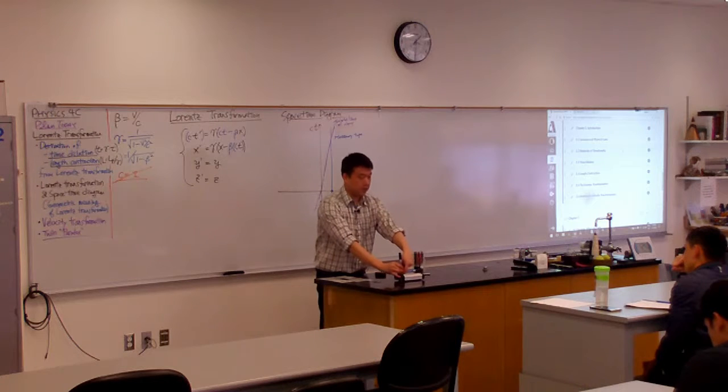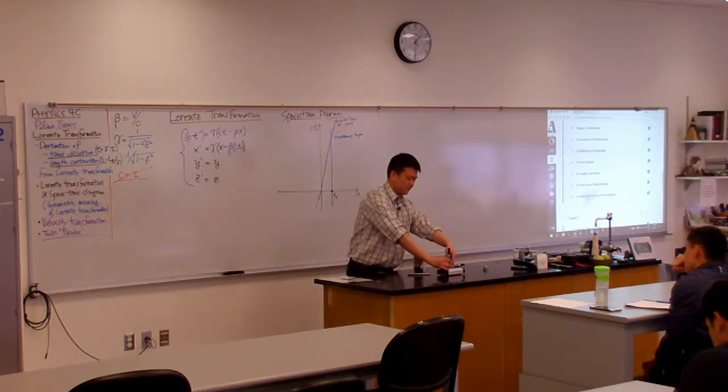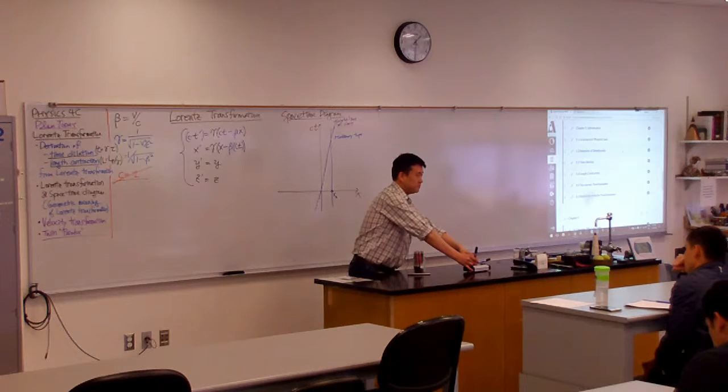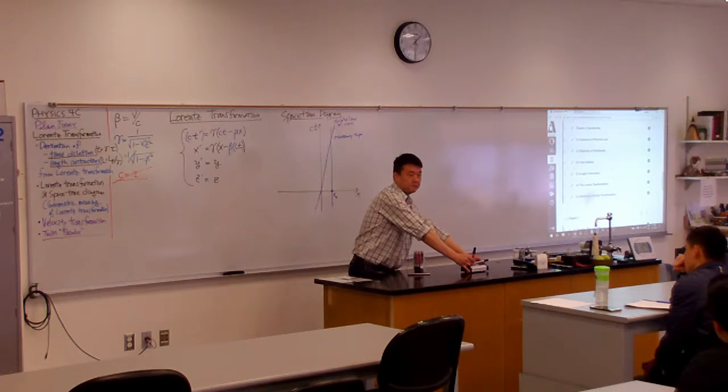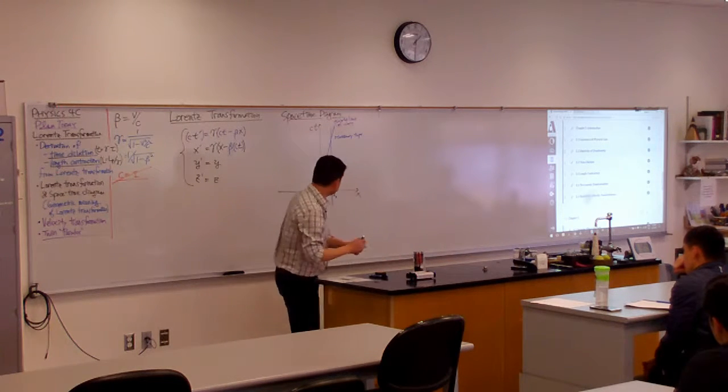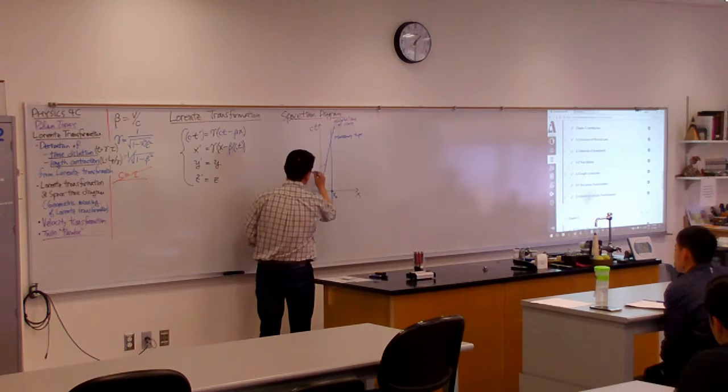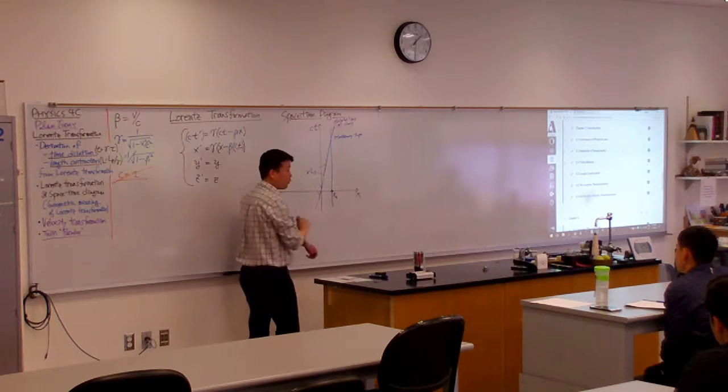It's the frame that moves with the cart. So this point is x prime equals 0. Over time, is the location of the cart at x prime equals 0? Right? So for all of these points, all of these points, x prime is equal to 0 for all time.